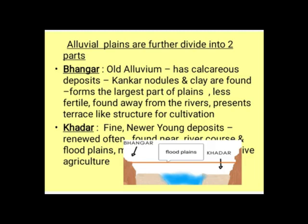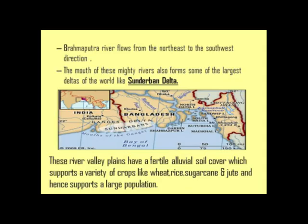Khadar soil is an ideal soil for agriculture and is highly fertile in nature. The Brahmaputra River flows from the north-east direction to the south-west direction. The mighty rivers — Ganga and its tributaries, and Brahmaputra and its tributaries — form some of the largest deltas of the world, like the Sundarban Delta.